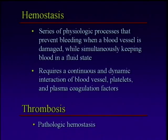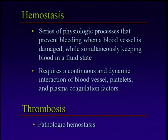This is a continuous dynamic interaction between many, many things. Part of it involves a blood vessel wall. Part of it involves proteins that are dissolved in the blood. And then the platelets, which are the cells that circulate in the body to help initiate the clotting process. There's a very complicated interaction between all these parts of the coagulation system that helps achieve what we call normal hemostasis.